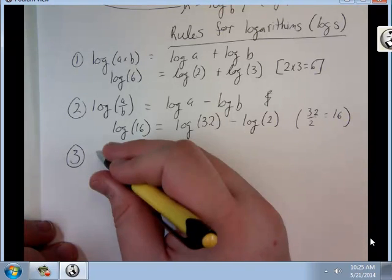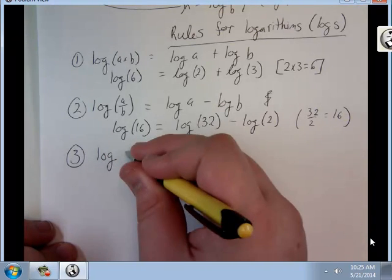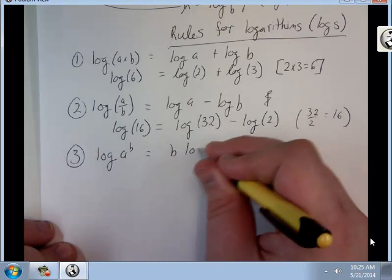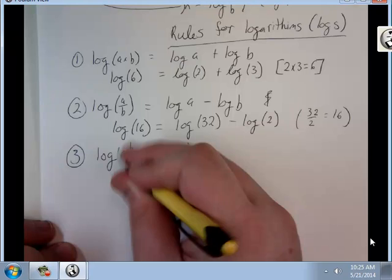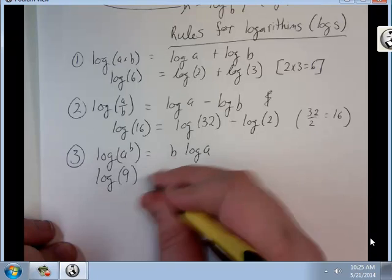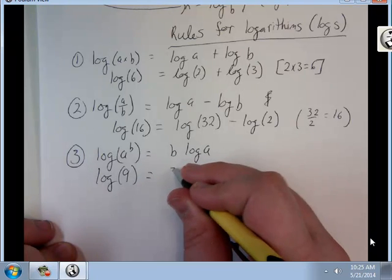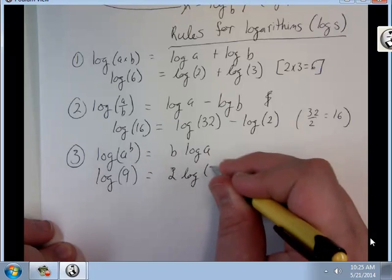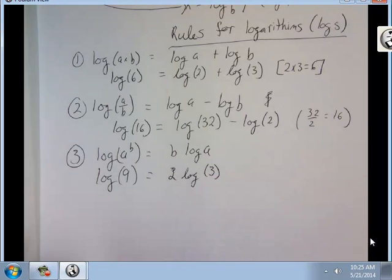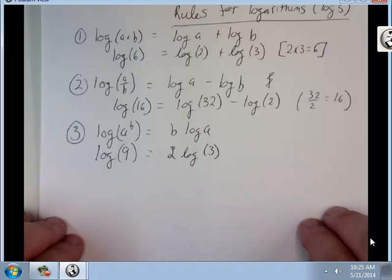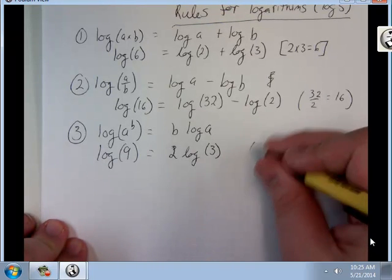Third, log of a to the power b equals b times log of a. So, the log of 9 equals 2 times the log of 3, because 3 to the 2nd equals 9.